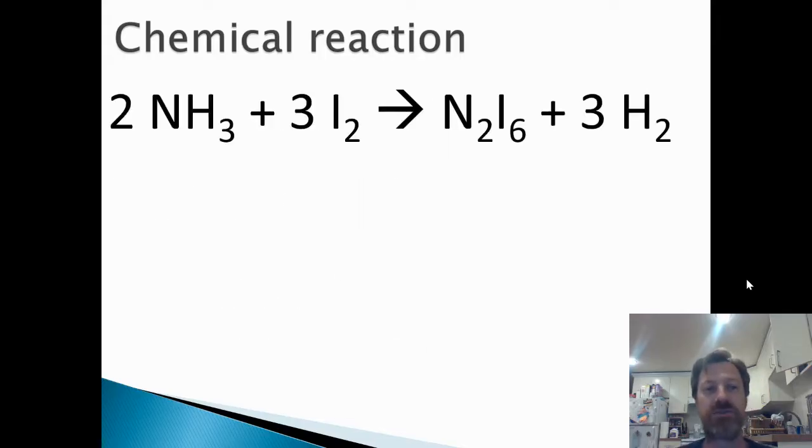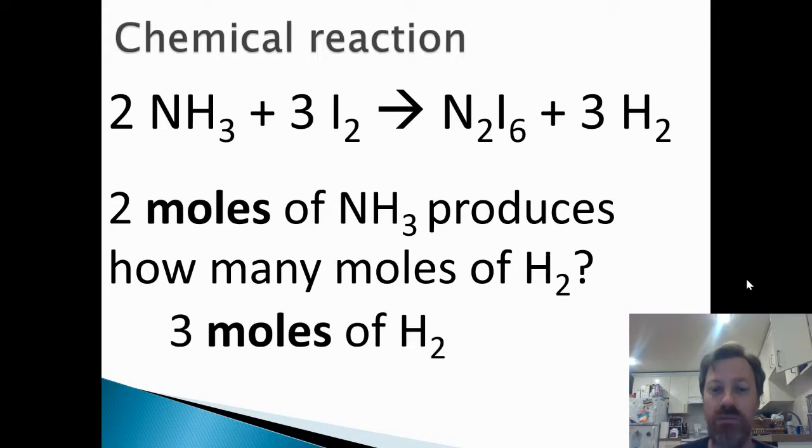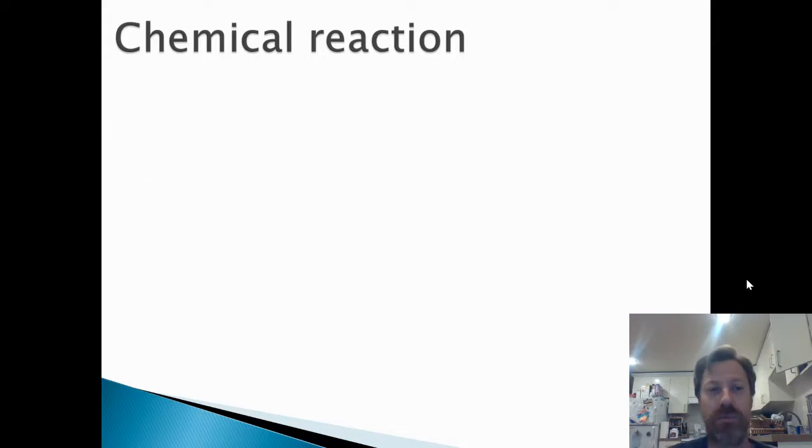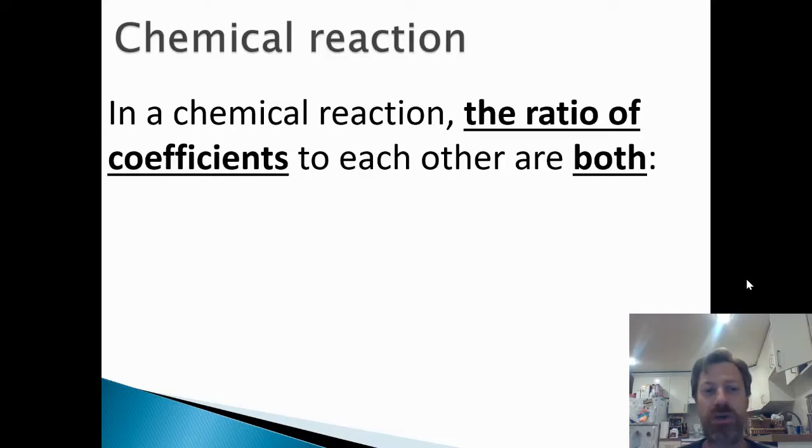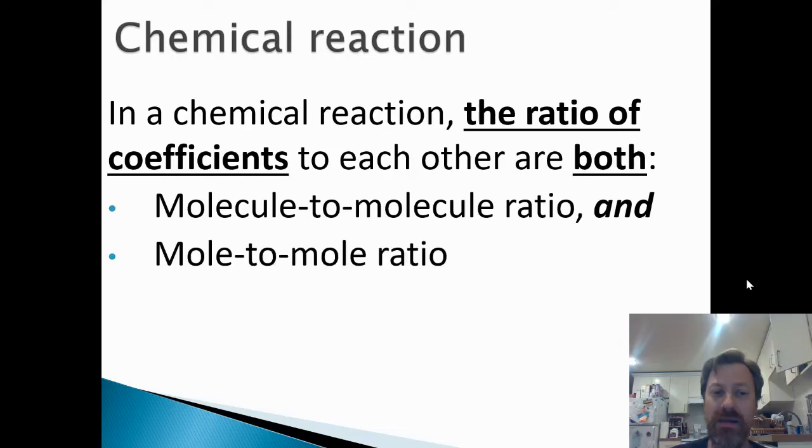Let's take a different reaction. Two NH3 plus three I2 form N2I6 plus three H2. Two moles of NH3 produces how many moles of H2? Now we know we can just use that ratio there. It's going to be three moles of H2. So what we can take away from here are a couple of things. The ratio of the coefficients to each other in the chemical reaction, specifically in a balanced equation, are both the molecule to molecule ratio and the mole to mole ratio. It's going to be the same thing.